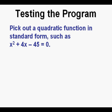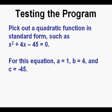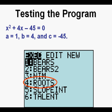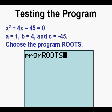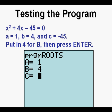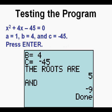Let's use the program. Pick out a quadratic equation in standard form, such as 1x² + 4x − 45 = 0. For this equation, A equals 1, B equals 4, and C equals negative 45. Press the Program key — here you see your program. Choose it by arrowing down and pressing Enter, or press the program number. Press Enter. Put in 1 for A, then press Enter. Put in 4 for B, then press Enter. Put in negative 45 for C, then press Enter. The solutions are 5 and negative 9.